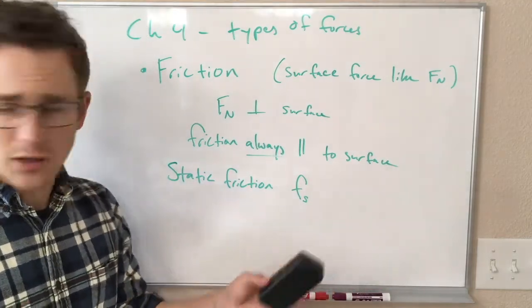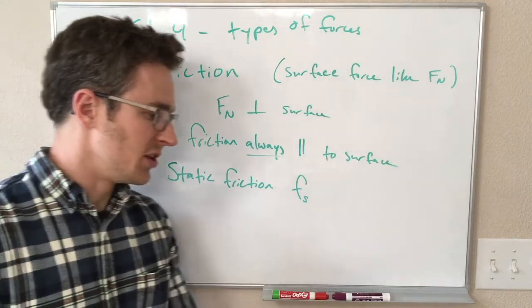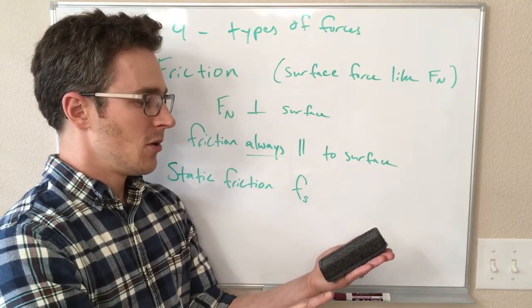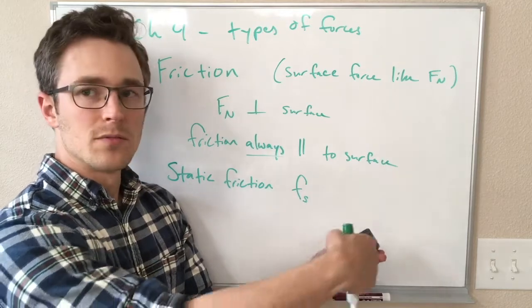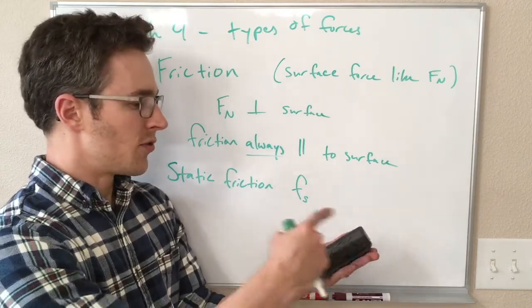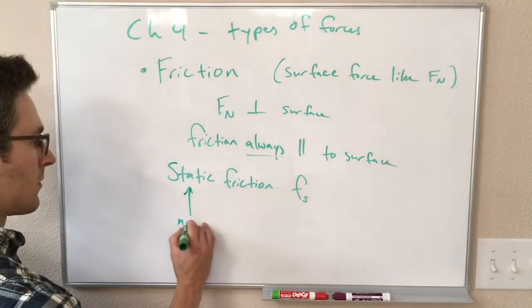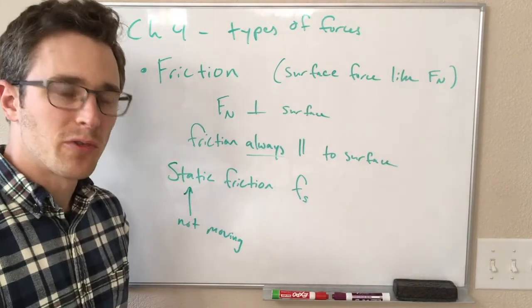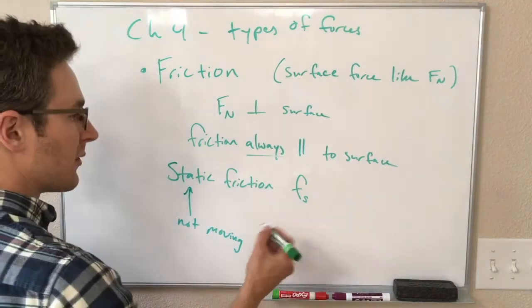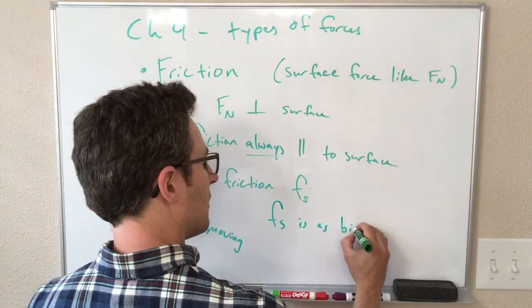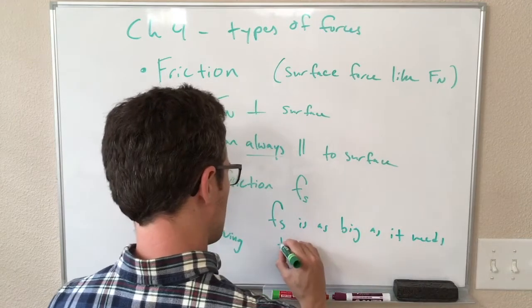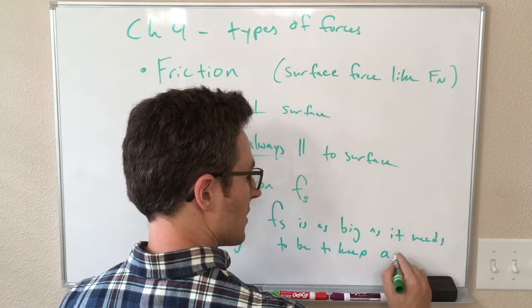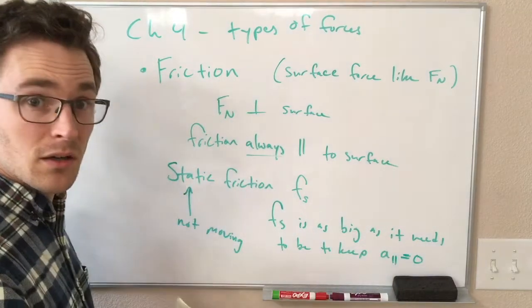For example, if I have this eraser on a surface that is tilted, this surface is exerting a friction force parallel to the surface that is keeping the eraser from sliding down this surface. So the eraser is static, it is not moving. That's what static means here. And this static friction is just big enough to keep it from moving. So kind of like the normal force, Fs is as big as it needs to be to keep the acceleration parallel to the surface equal to zero, but there is a limit.